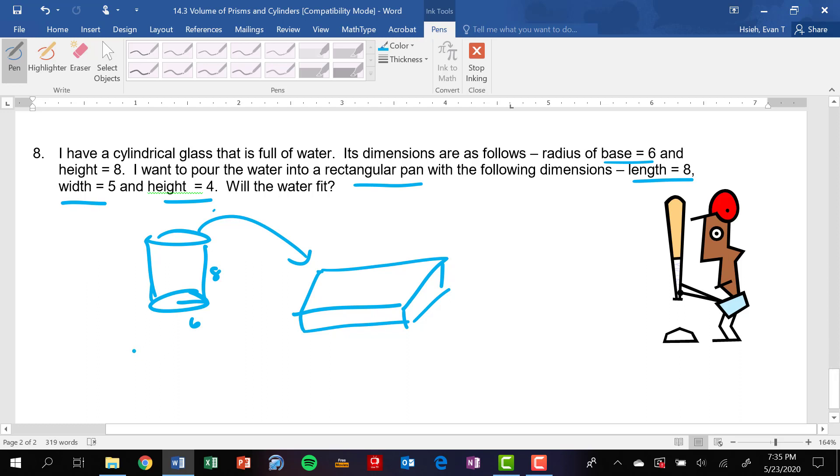So I need to find the volume of both of these. This one's going to be, well it's going to be base times the height. Base is going to be 36 pi, or pi r squared times the height, which is eight. I believe is 288 pi. That's the volume of what's in the cylindrical glass.